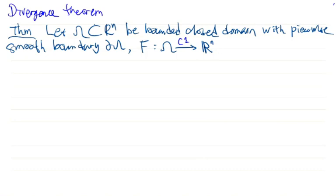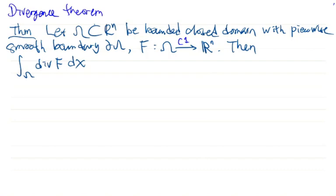The vector field f is C^1, meaning continuously differentiable. Then we have the integral of the divergence of f, which is a multiple integral — an n-dimensional or n-fold integral — because it is taken over the domain.